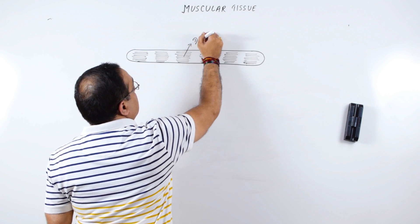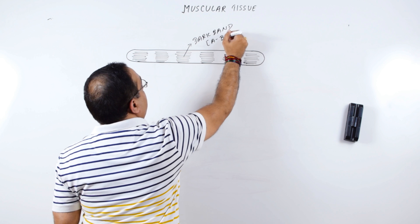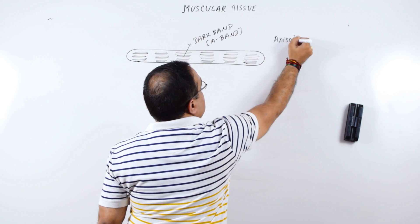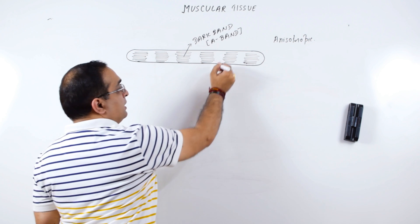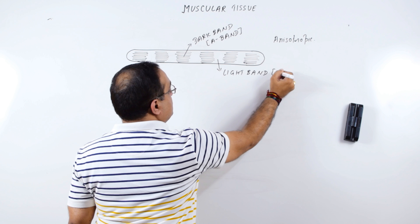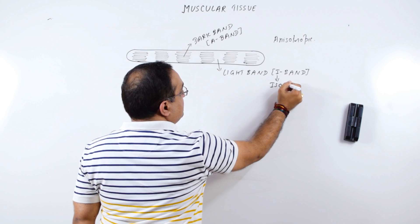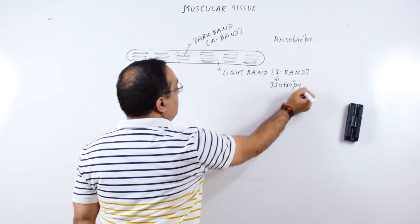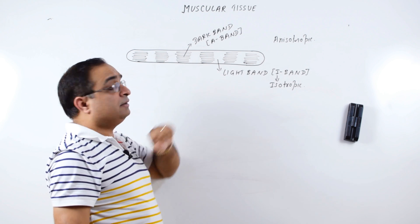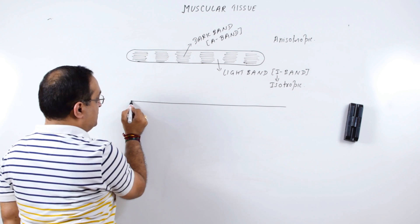I am labeling this as dark band. The dark band is also termed A band. A stands for anisotropic band. This is reference to their refractive index. This is a light band. The light band is also termed I band. I stands for isotropic. So there is isotropic band, there is anisotropic band. That's the reason why they are called striated. Now how these light and dark bands are formed, let's see the ultra structure of muscle fiber, skeletal muscle fiber.